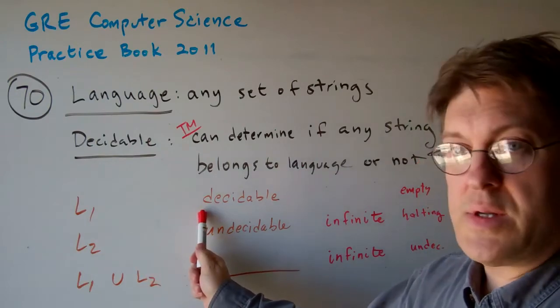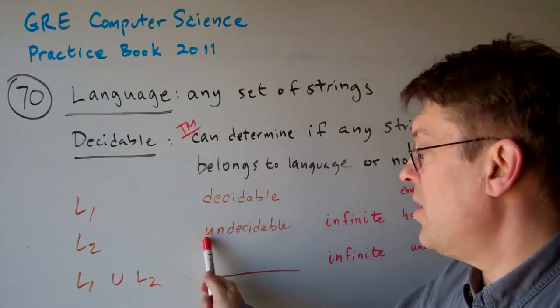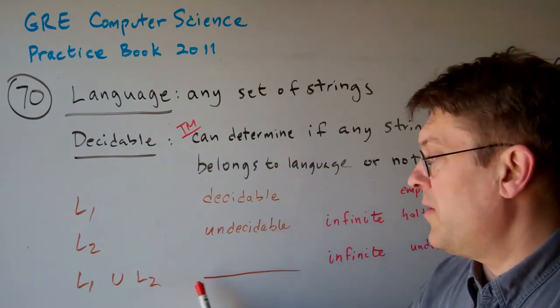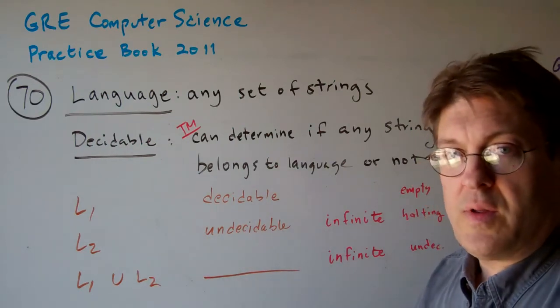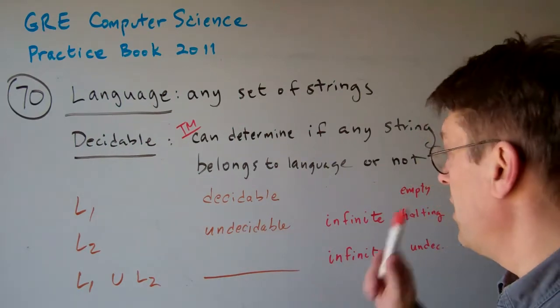Now, L1 we know is decidable. L2 we know is undecidable. And we're trying to figure out if L1 or L2 is decidable and whether or not it's infinite.